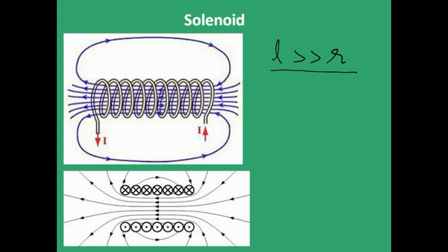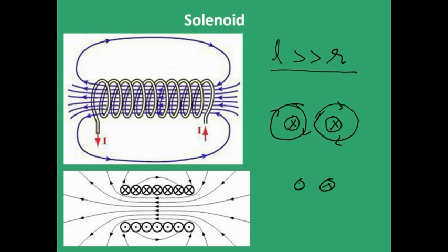Why is it closely wound? If I have a current-carrying wire going into the screen, the magnetic field will be like this. If I place another wire also going into the screen, the magnetic field due to that will also be in this direction. Now the combined effect of these two — since the fields are in opposing directions between the wires — they both get cancelled. When I have two wires placed closely, and similarly with three wires, I get a field pattern like what you see in the second picture.